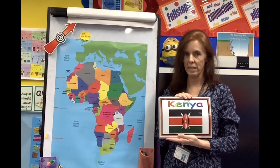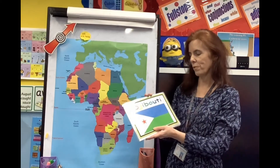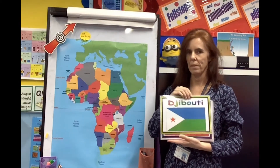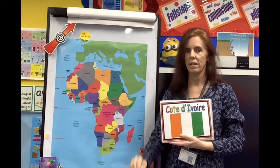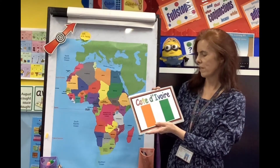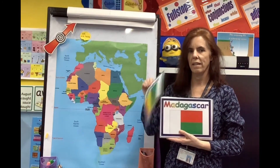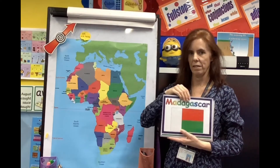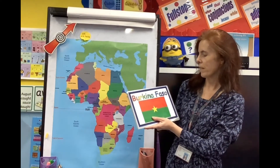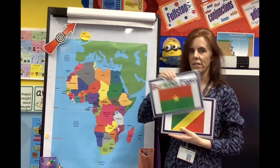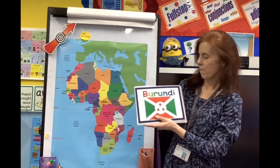Kenya - you'll be seeing that flag with the spears and the shield again. I'm not sure how to say this one - Djibouti, I think it's Djibouti. This one's Ethiopia. And this is a French word - Côte d'Ivoire. That's Guinea and Madagascar, Chad and Burkina Faso.